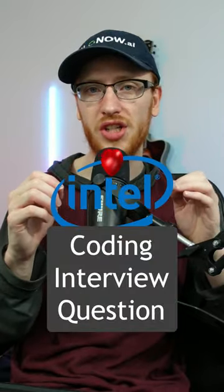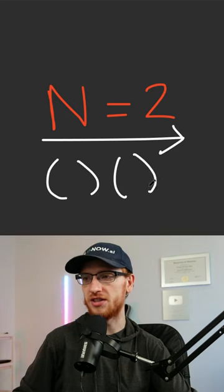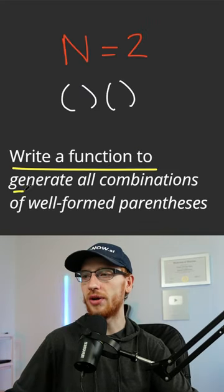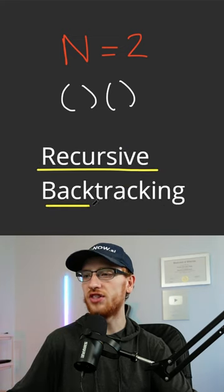Intel loves this coding interview question. We're given an integer n, which means we have n pairs of round parentheses. We need to write a function to generate all combinations of well-formed parentheses. And we'll use an algorithm known as recursive backtracking.